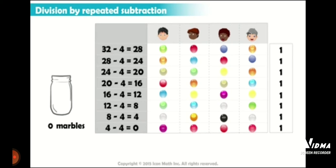So the dividend is 32 and the divisor is 4. So if we divide this 32 by 4, what will we get? We will get 8. So here clearly you can see these 32 marbles are divided among 4 students, and each student has got 8 marbles.